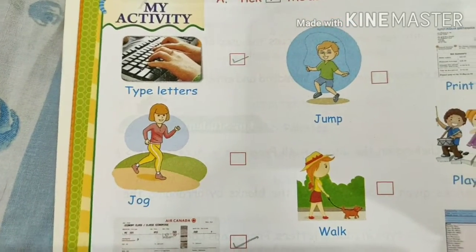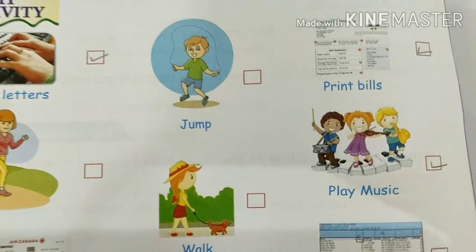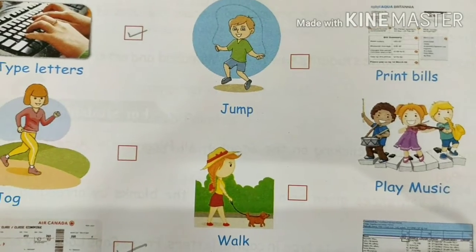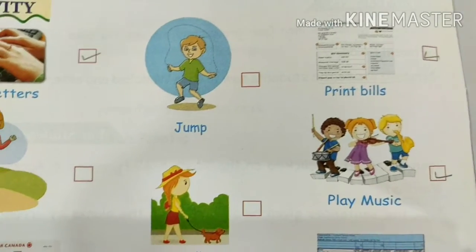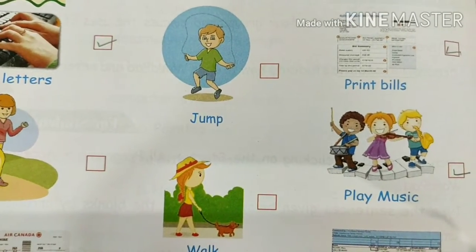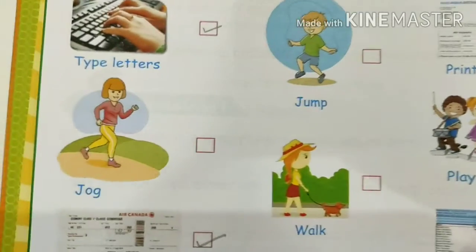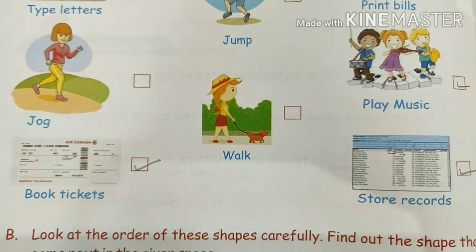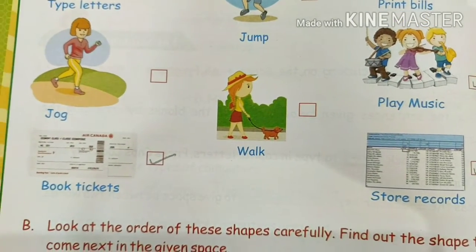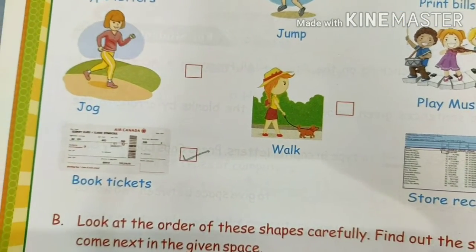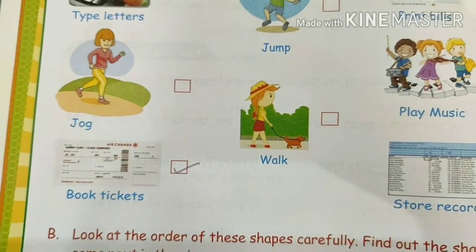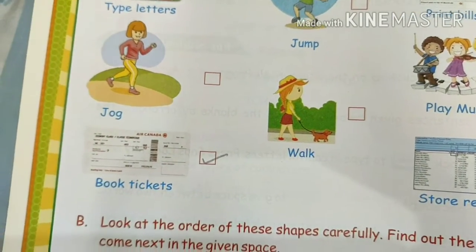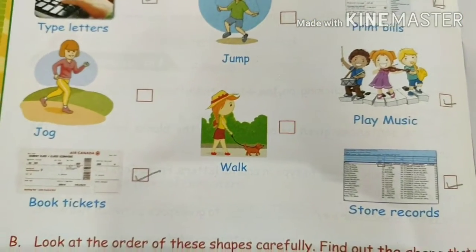Then: jog, walk, play music. You can definitely play music on a computer, so you will take that one. Jog and walk — no, that is wrong. Book tickets and store records — both will be ticked. You will take in both those activities: book tickets and store records.